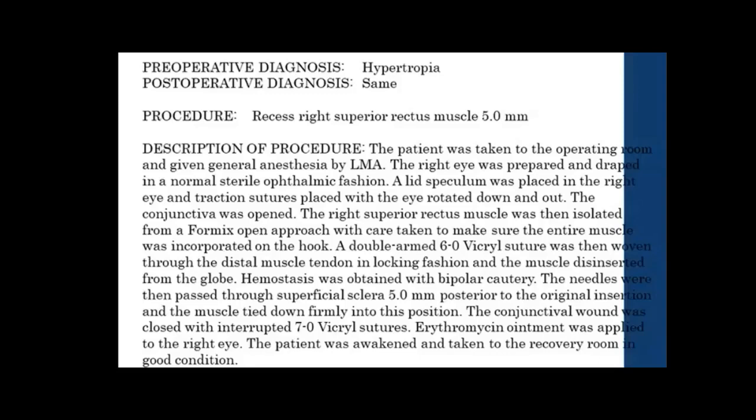The next sentence says the conjunctiva was opened — that's where we actually start the procedure. Then it says the right superior rectus muscle was isolated from a fornix open approach, a double-armed 6-0 Vicryl suture was woven through the distal muscle tendon in locking fashion and the muscle disinserted from the globe. Hemostasis was obtained using bipolar cautery. The needles were passed through superficial sclera 5 millimeters posterior to the original insertion and the muscle tied down firmly. So what are we doing here? We're moving this eye muscle. What is our root operation for moving something from one spot to another?